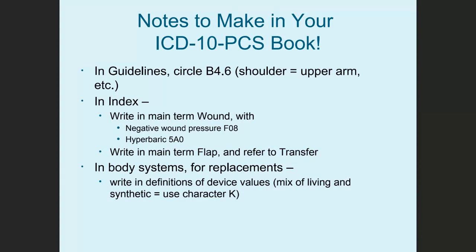In your PCS book, look at guideline B4.6, which gives you that shoulder equals upper arm, hip equals upper leg, and so forth, so you can find those easily. For negative wound pressure and hyperbaric treatment, which are very hard to find in the index: write in the main term wound with a subterm negative wound pressure F085B, and hyperbaric 5A0. Also write in the main term flap and refer to transfer. In the body system sections for replacements, write in the definitions of the device values — for example, a mix of living and synthetic material uses character K.